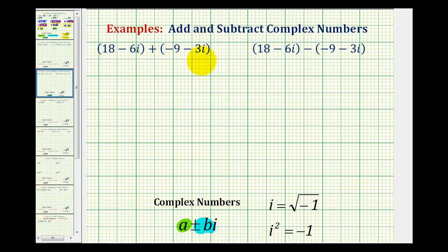Looking at the first example, we have 18 minus 6i plus negative 9 minus 3i. When doing these types of problems, it's helpful to clear the parentheses. So we have 18 minus 6i plus negative 9 plus negative 3i.